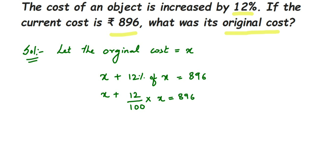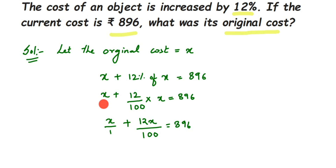Let me rewrite this. I'm writing x as x/1, because we have to take the LCM. So we have x/1 plus 12x/100 equals 896. We need to take the LCM because we cannot directly add x and 12x/100 — one is a whole number and one is a fraction. The LCM of 1 and 100 is 100.